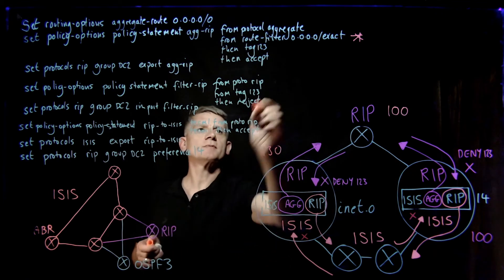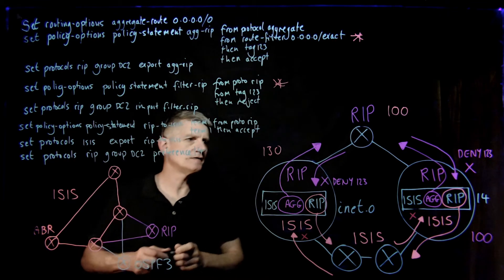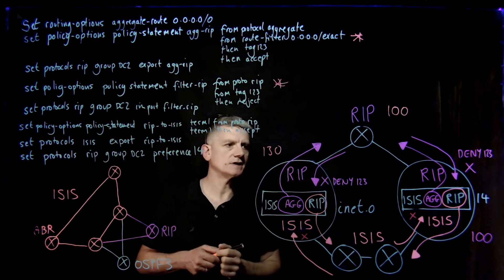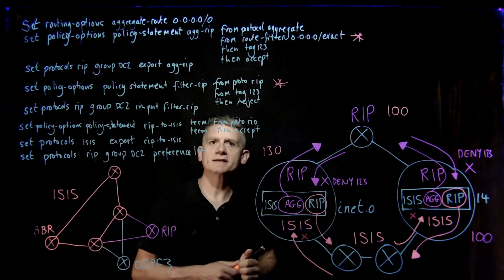We're going to select from protocol RIP. We're going to select from the tag, and we're going to reject it. And obviously, the import on one ASBR blocks the export on the other, and vice versa. So that's one half of the redistribution here between ISIS and RIP.